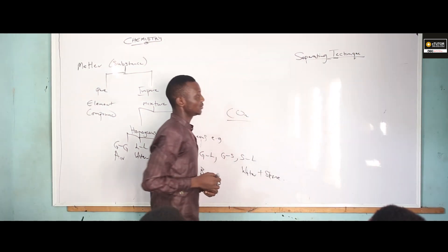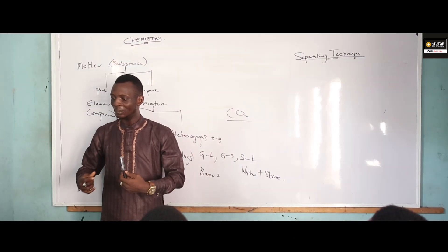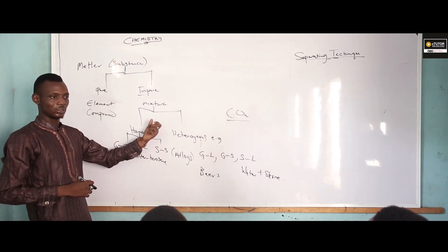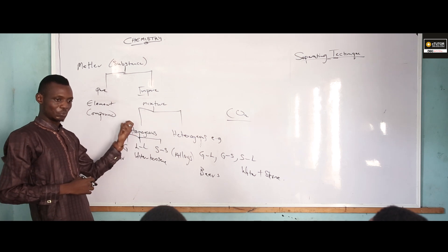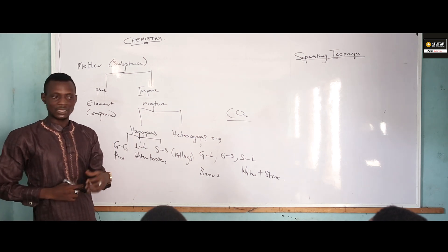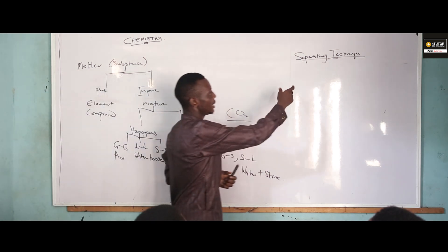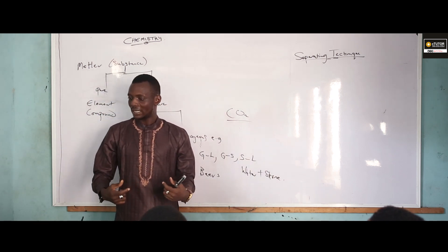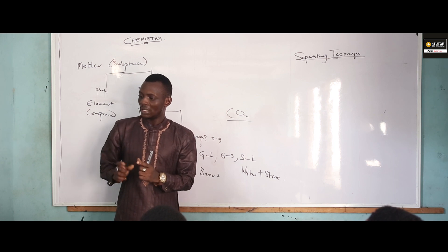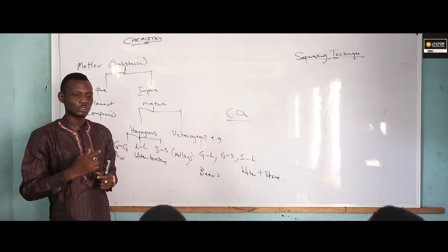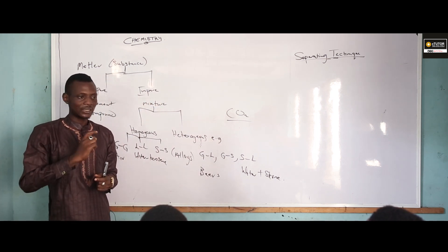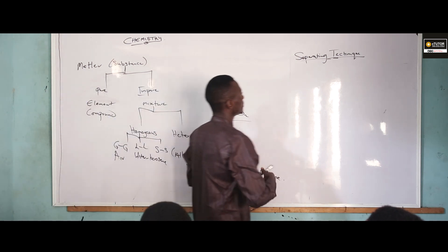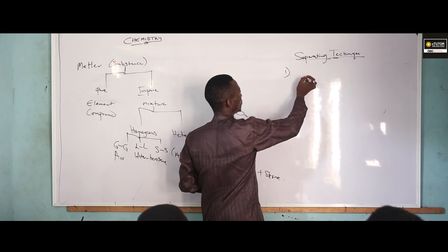Separating techniques are techniques which we employ in chemistry to convert our mixture — that means impure substance — to pure substance. Now, for you to apply any technique to separate anything, you must first determine the physical constituents of that mixture.